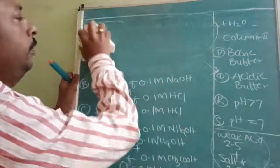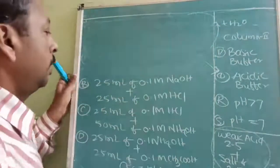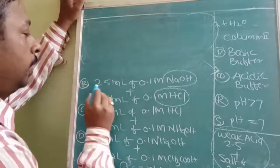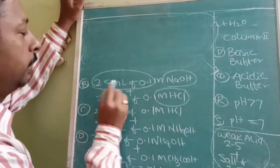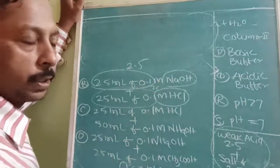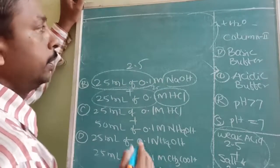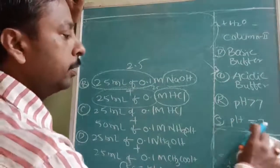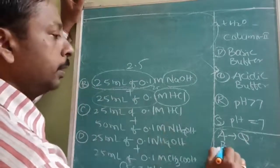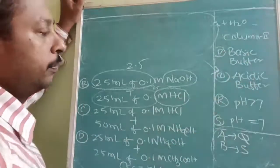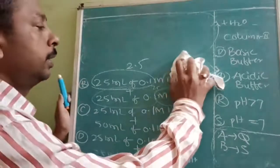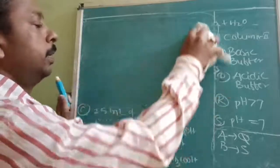For part B: we have strong acid and strong base. Milliequivalents are both 2.5. Complete neutralization occurs — strong acid plus strong base forms a neutral salt. Therefore pH = 7. It is not a buffer since strong acid and strong base cannot form a buffer. B answer is S.